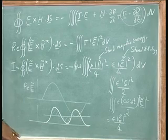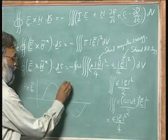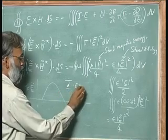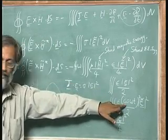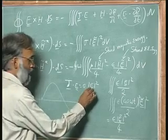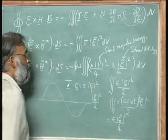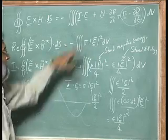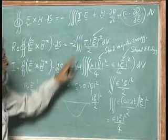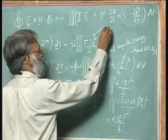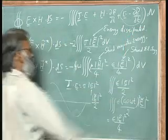For the J dot E piece: J dot E is σ|E|², and since E goes as cos(ωt), averaging |E|² in time gives a factor of 1/2. So the volume integral of σ|E|²/2 represents energy dissipated. We divide by 2 and multiply by 2 accordingly, so the piece — volume integral of σ|E_phasor|²/2 — represents energy dissipated.